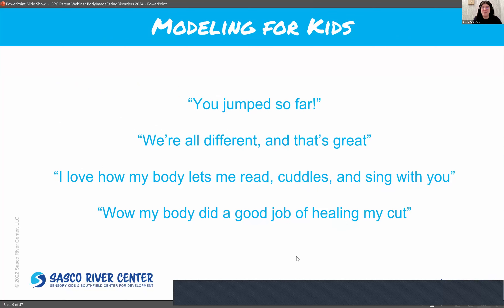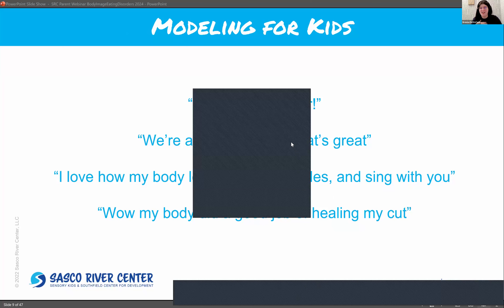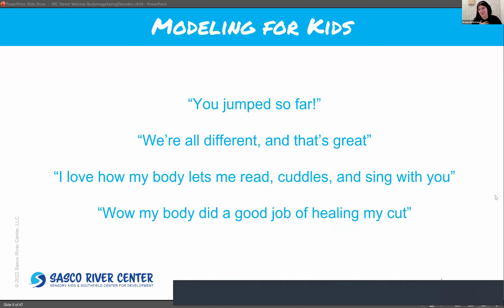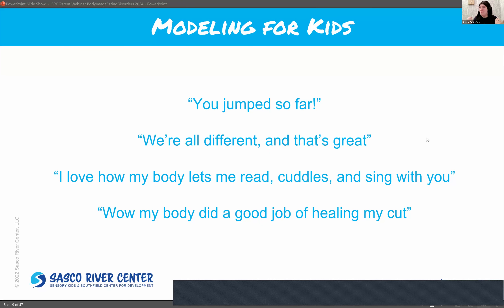Some examples of modeling for your body image with young children: 'I love how my body lets me read, cuddle, and sing with you.' Or 'Wow, look at my body healing that cut I had.' Or when a child hurts their leg, instead of just saying you'll get better, say, 'Look how fast your body healed itself,' or 'You jumped so far — we're all different and that's great.' This fosters acceptance of what the body does, not just how it looks. Even if it doesn't look like mom or dad's or cousin Billy's — that's okay.